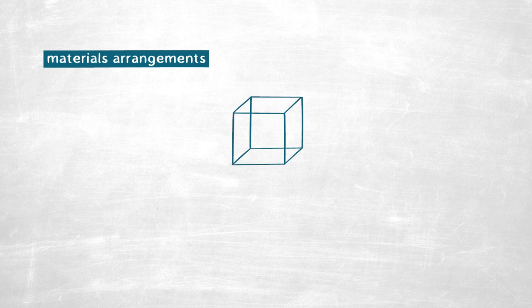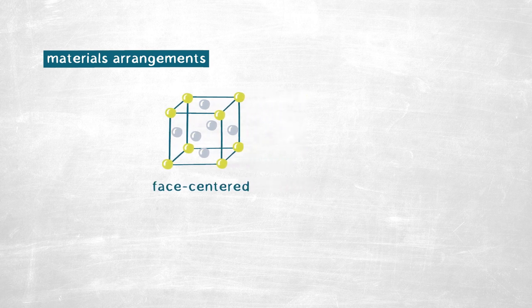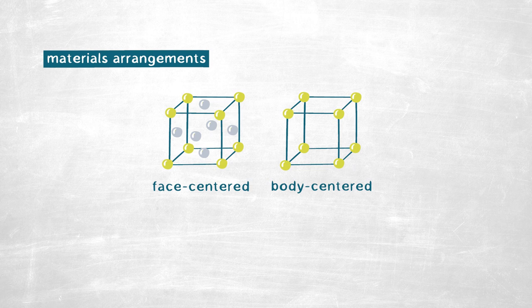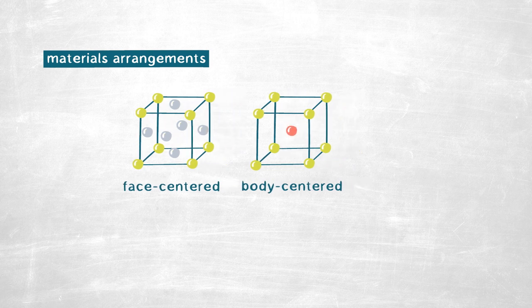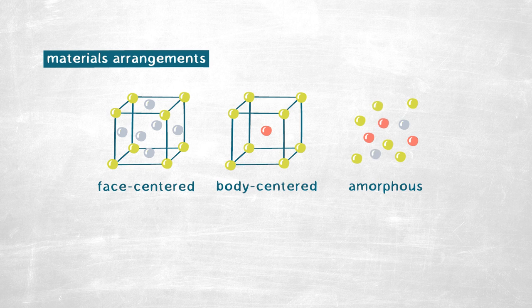In terms of arrangement, we can have these materials in three forms: face-centered cubic, body-centered cubic, or amorphous. If we imagine a cubic box, for the face-centered cubic we have one atom in each corner, and then one extra atom on the face of each cube. For body-centered cubic, we have the same atoms on the corners, but an extra atom in the middle of the cube. And for the amorphous structure, we don't have any kind of cube. We have a random distribution of the atoms without any order.